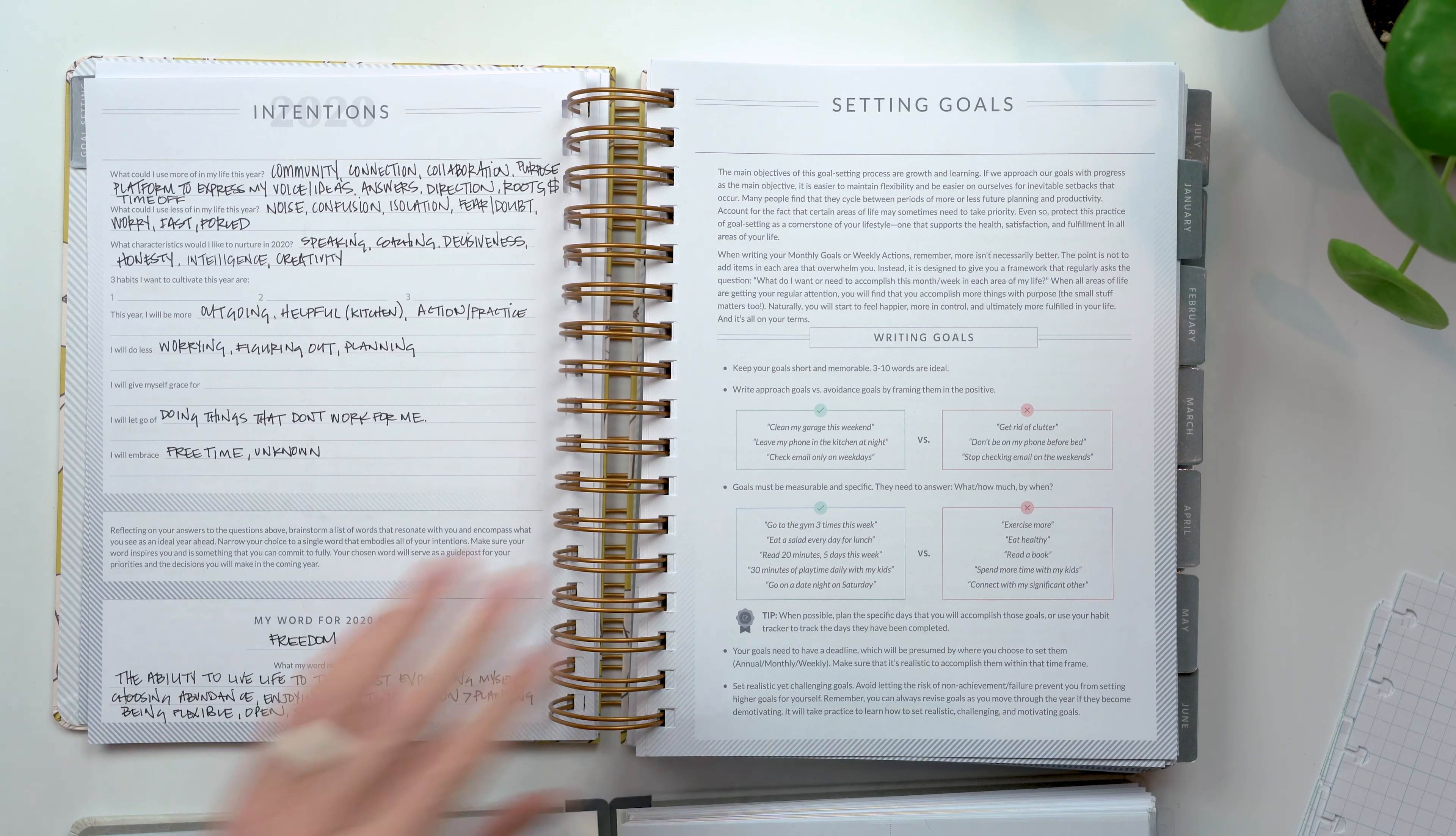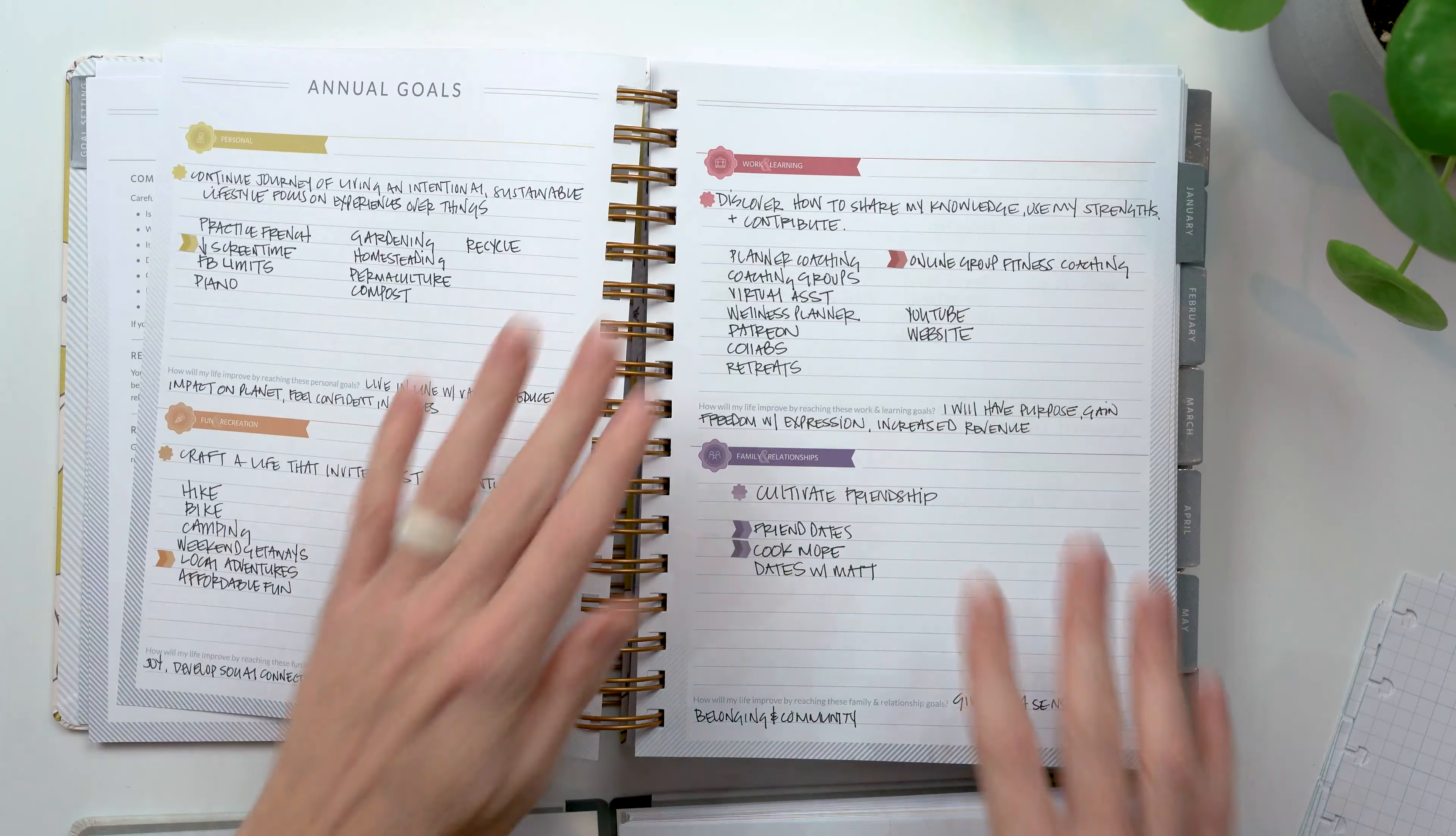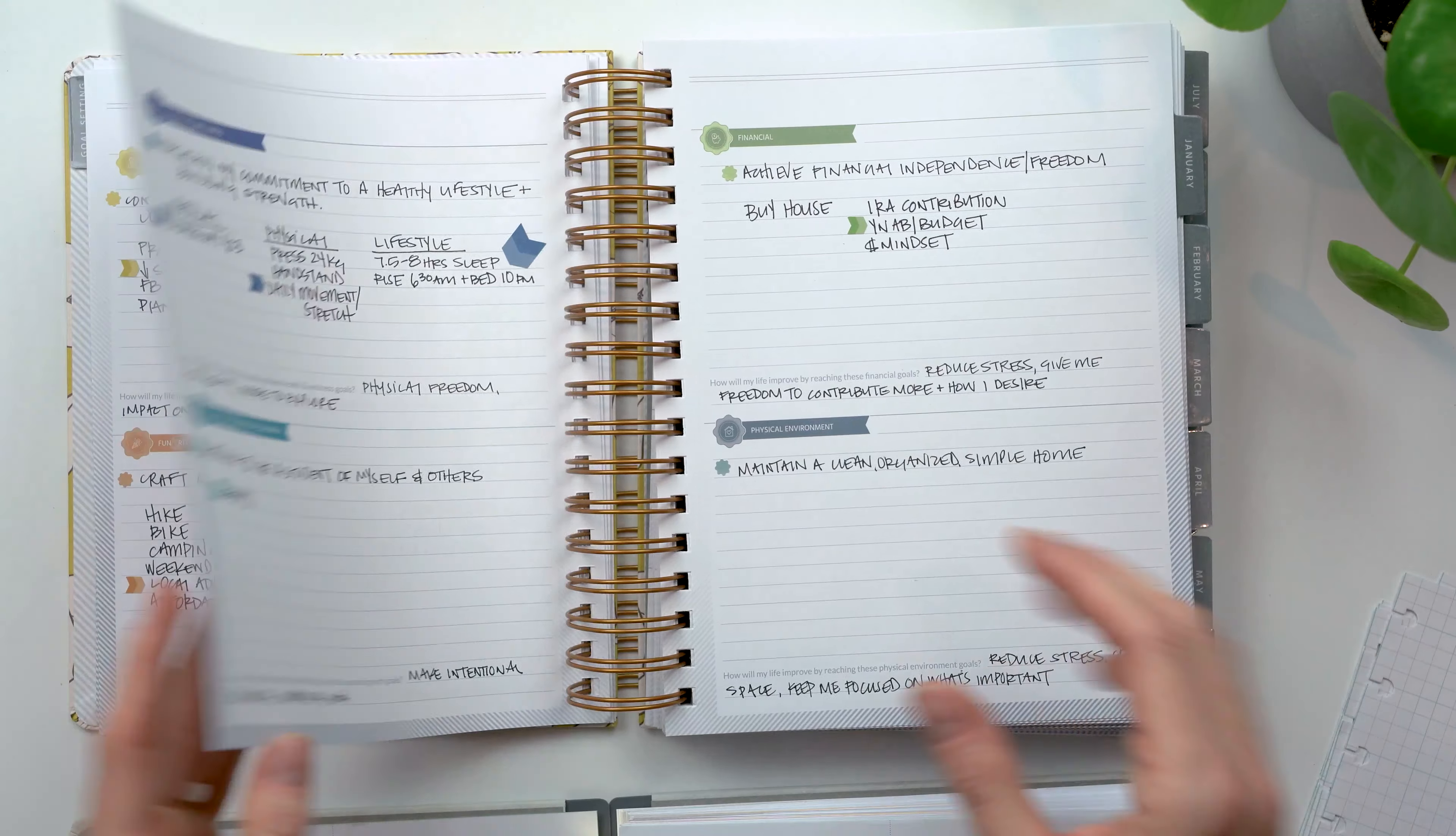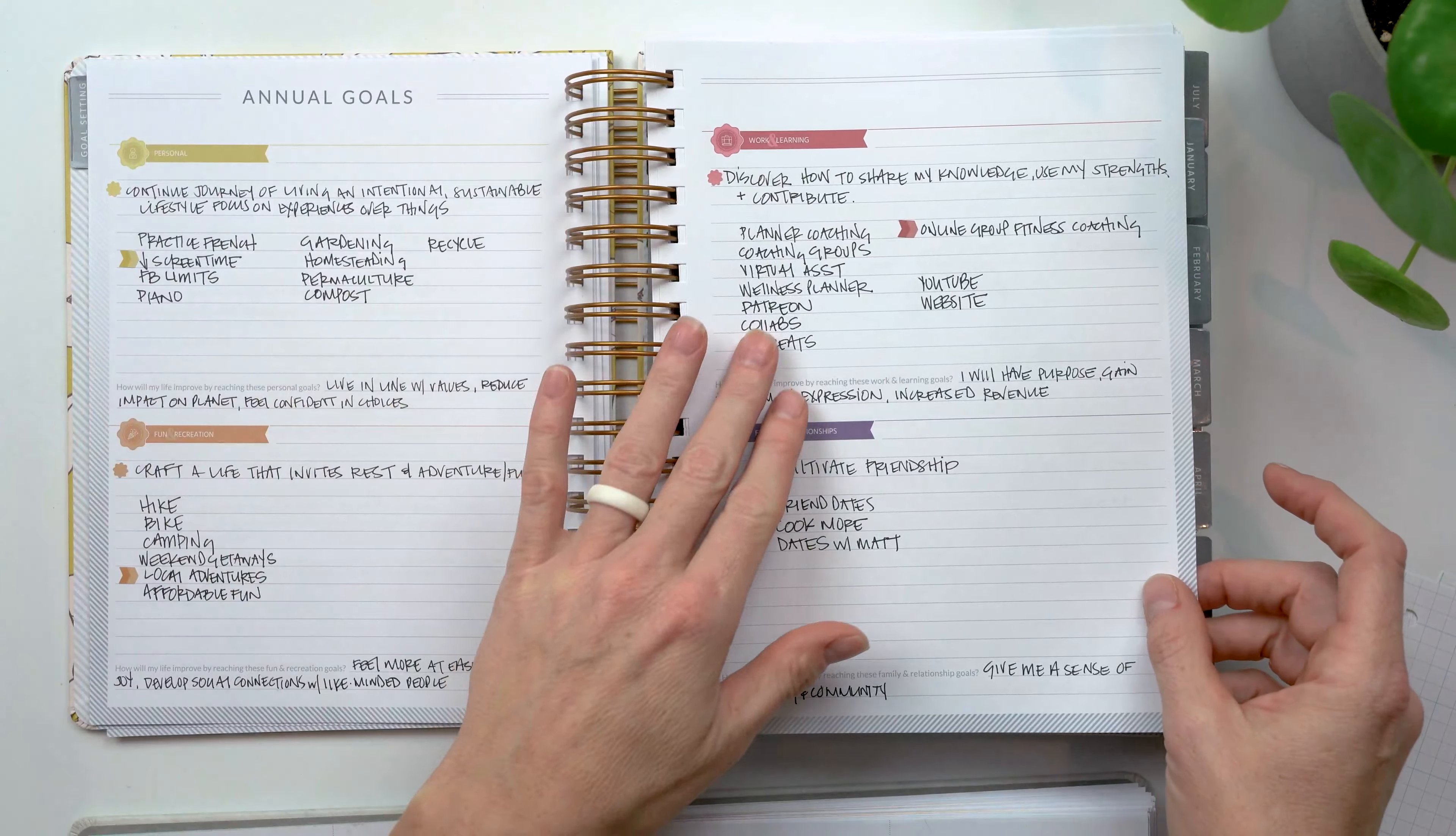So from there, when it, when we look at annual goals, again, Moxie is going to walk you through it more, but you have a lot more space in your Moxie Life for annual goals. You have one, two, three, four pages, two goals per page lined.